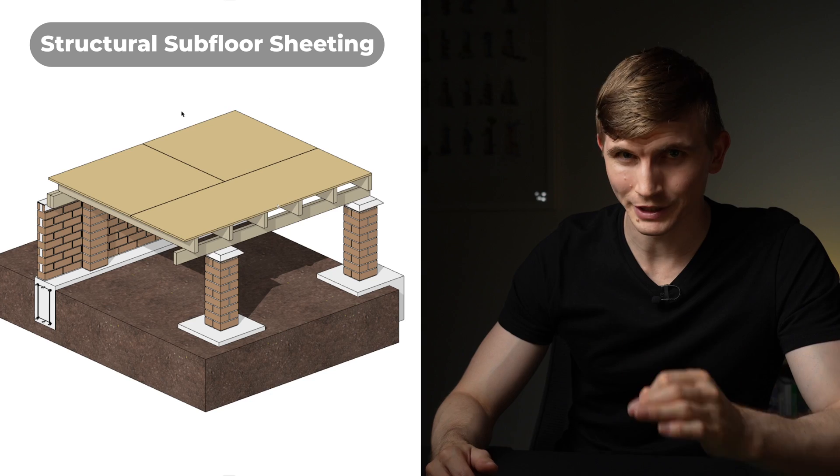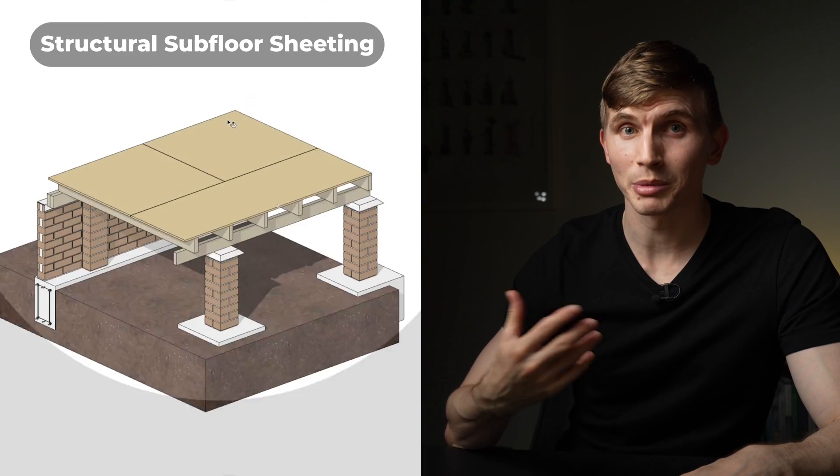After this the structural subfloor sheeting like particle board or plywood sheeting is installed to form up the platform and on top of the platform the walls are built and installed.